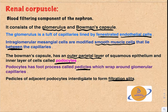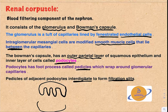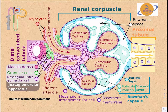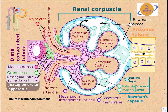The pedicles of adjacent podocytes interdigitate with each other to form the filtration slits. Through these filtration slits the glomerular filtrate passes into the Bowman's capsule. The blood reaches the renal corpuscle through the afferent arteriole, passes into the glomerular capillaries, and the filtrate passes through the fenestrations between endothelial cells and through the filtration slits into the Bowman's space, then continues into the proximal convoluted tubule and the rest of the renal tubules.